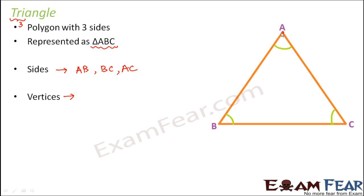Next are the vertices. Vertices are those points where the sides meet. For example point A, so A is a vertex. So at A, AB and AC, they both meet. Similarly at B, AB and BC they meet. Similarly AC and BC they meet at point C. Therefore points A, B and C are the vertices of the triangle.